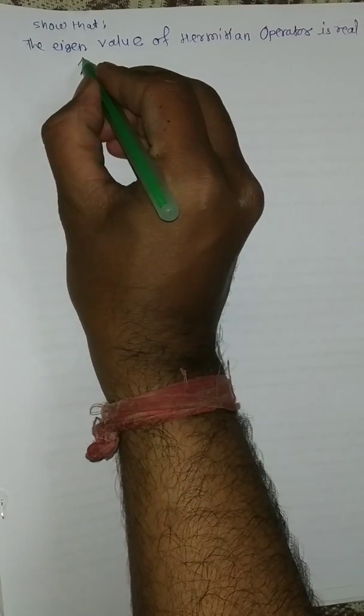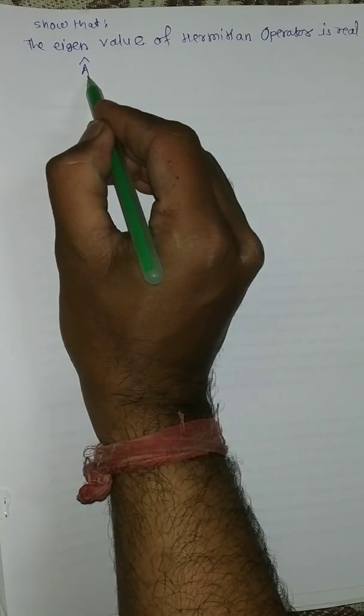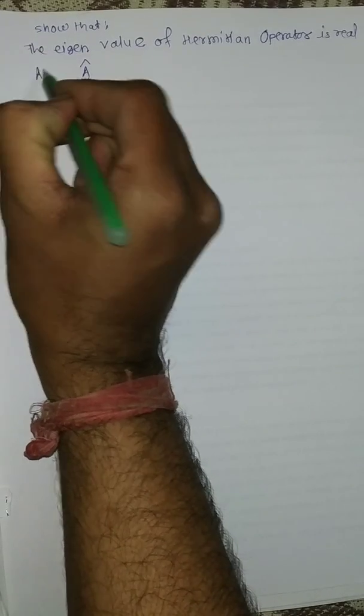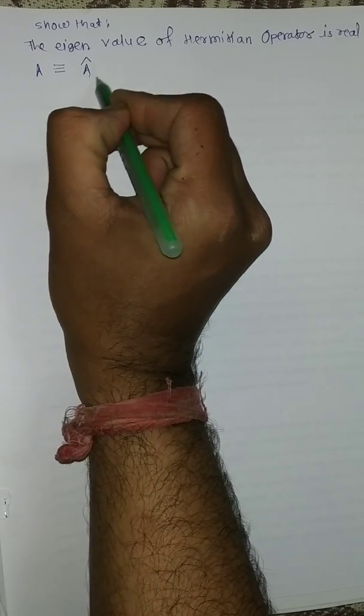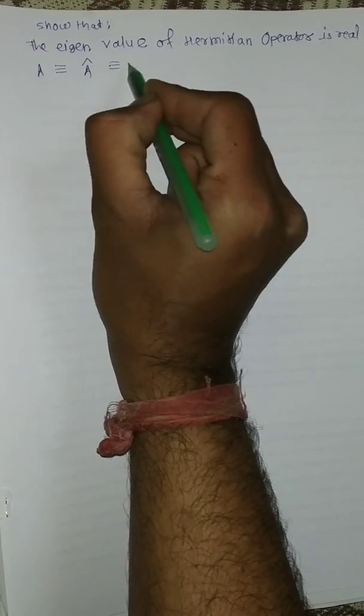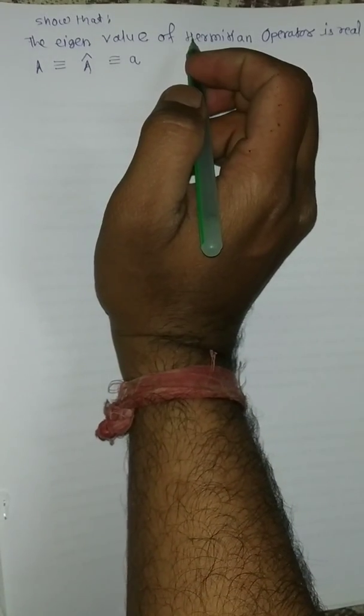Today we are going to see one of the statements from quantum chemistry: the eigenvalue of a Hermitian operator is real. Any eigenvalue associated with any observable — for example, A is an operator, and A is any observable property associated with this operator. This operator corresponds to an eigenvalue A, which is the third postulate of quantum mechanics.